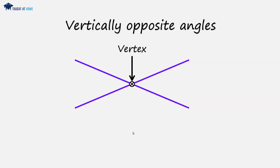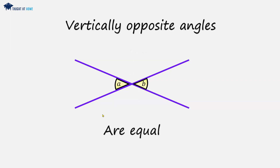The vertex here refers to the word 'vertically,' so angles that are vertically opposite are opposite this vertex. For instance, we have angle a and angle b, and a and b are equal — so vertically opposite angles are equal.